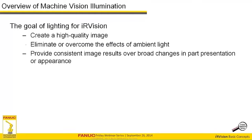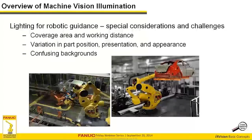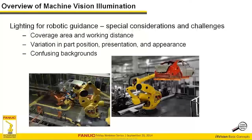In conclusion regarding lighting for IR vision, our goals are: create a high-quality image per our definition, overcome or eliminate the effects of ambient light as needed, and provide consistent image results over broad changes in part presentation or appearance. This is especially important in robotic guidance, where a robot works within our field of view — posing special considerations and important challenges for machine vision professionals.